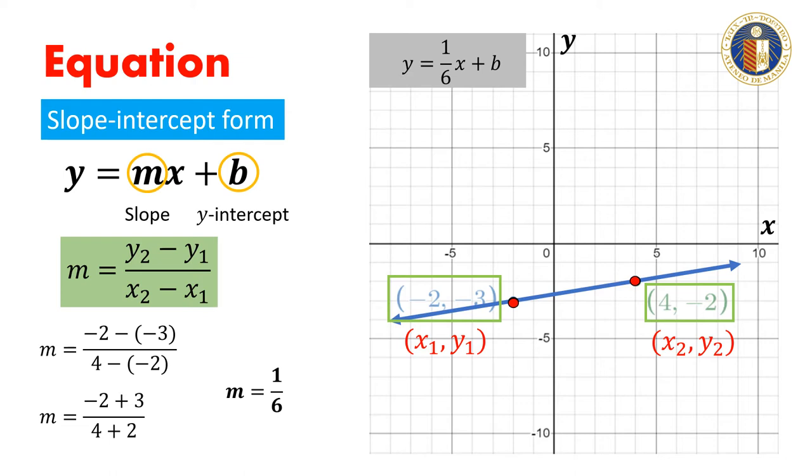Next, we need to determine the value of b or the y-intercept. If we look back at the two given points, neither of these is the y-intercept because neither of the x-coordinates is equal to 0. But these points are on the line, which means if we substitute the x and y-coordinates into the linear equation...